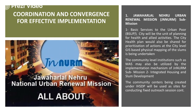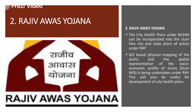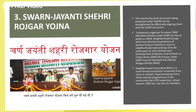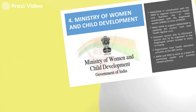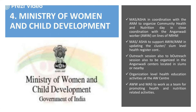Key convergence schemes include: the Jawaharlal Nehru Urban Renewal Mission, targeted at transferring people from slum areas to developed housing for a better quality of life; the Rajiv Avas Yojana, launched to provide good quality housing for people living in slum areas; the Swarna Jayanti Shahari Rojgar Yojana, focused on employment for below poverty line people including women and children; and the Ministry of Women and Child Development, which organizes community health and nutritional requirements in coordination with Anganwadi workers, ASHA workers, and USHA workers for adequate healthcare planning.